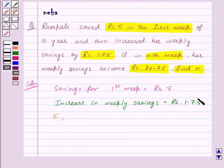So the savings for first week are rupees 5. Now the savings for second week will be rupees 5 plus rupees 1.75, that is 6.75. And for third week it will be the savings for second week plus rupees 1.75, that will be rupees 8.50, and so on.